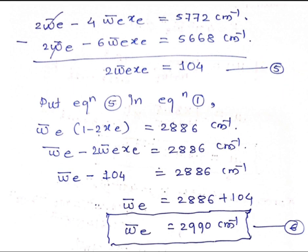Now substitute Equation 5 into the expanded form of Equation 1: ω̄e − 2ω̄exe = 2886 cm⁻¹. Replacing 2ω̄exe with 104: ω̄e − 104 = 2886 cm⁻¹. Therefore ω̄e = 2886 + 104 = 2990 cm⁻¹. This is Equation 6 — we have now found the equilibrium frequency of the anharmonic oscillator.